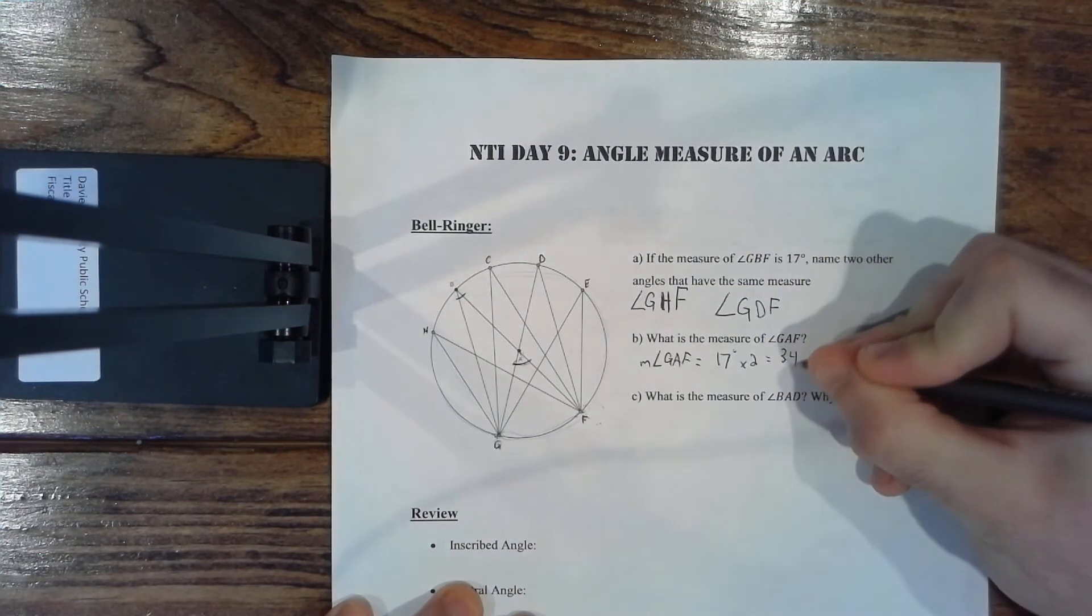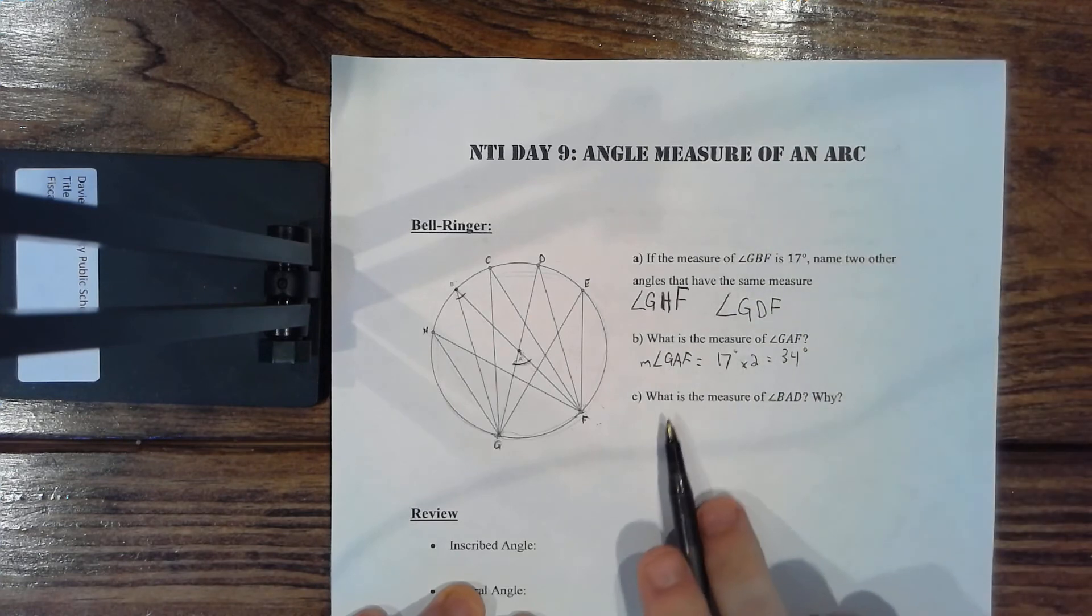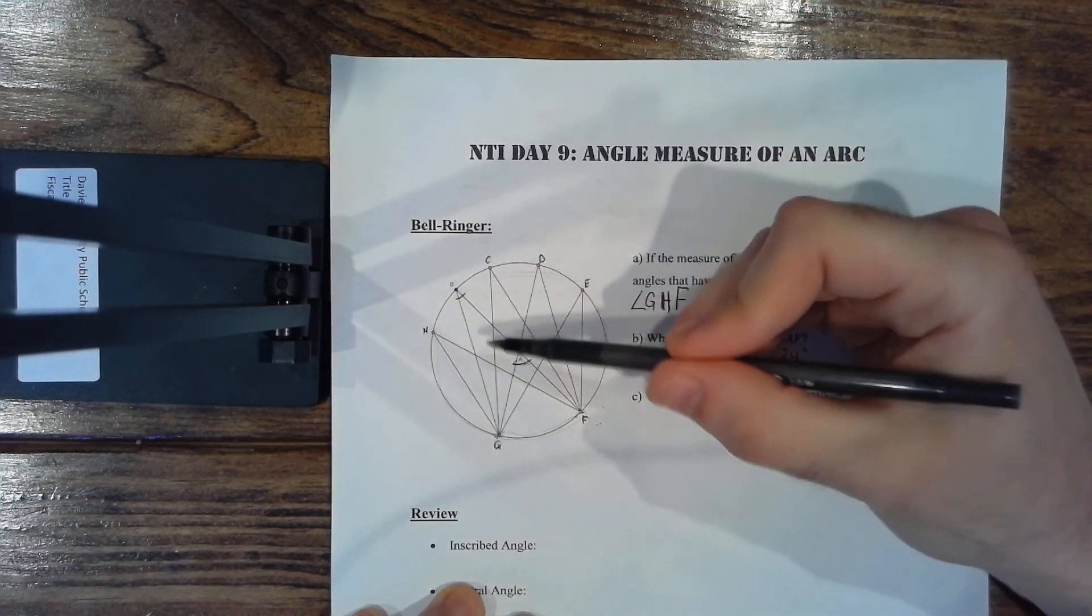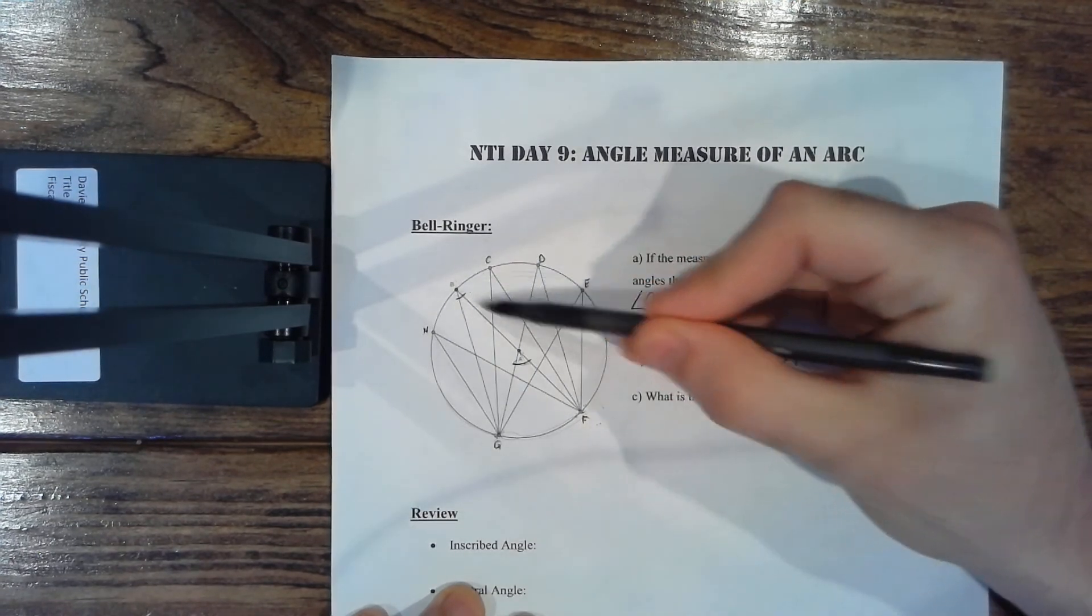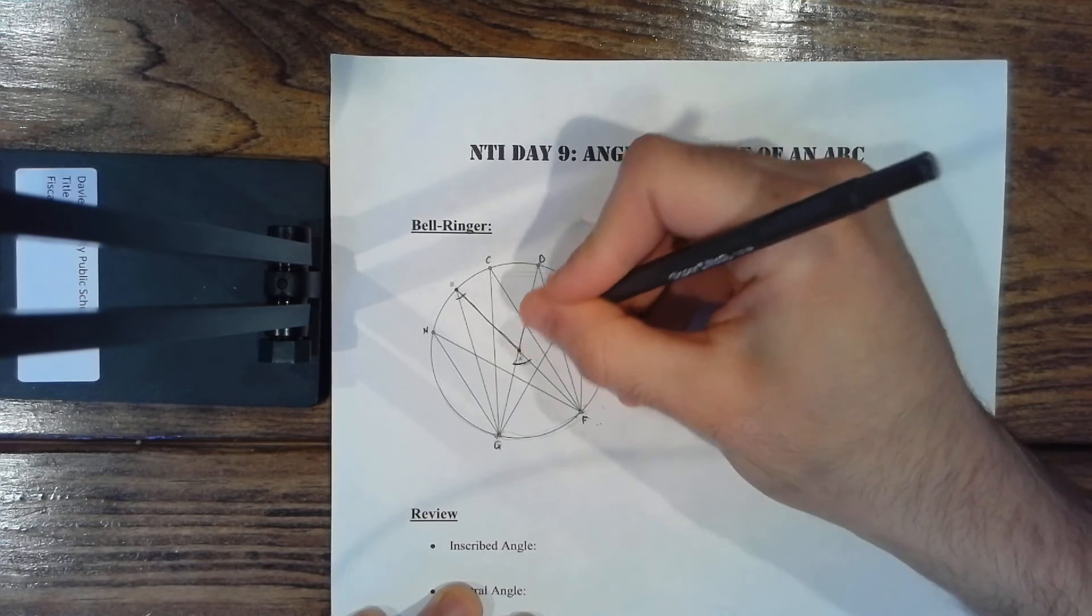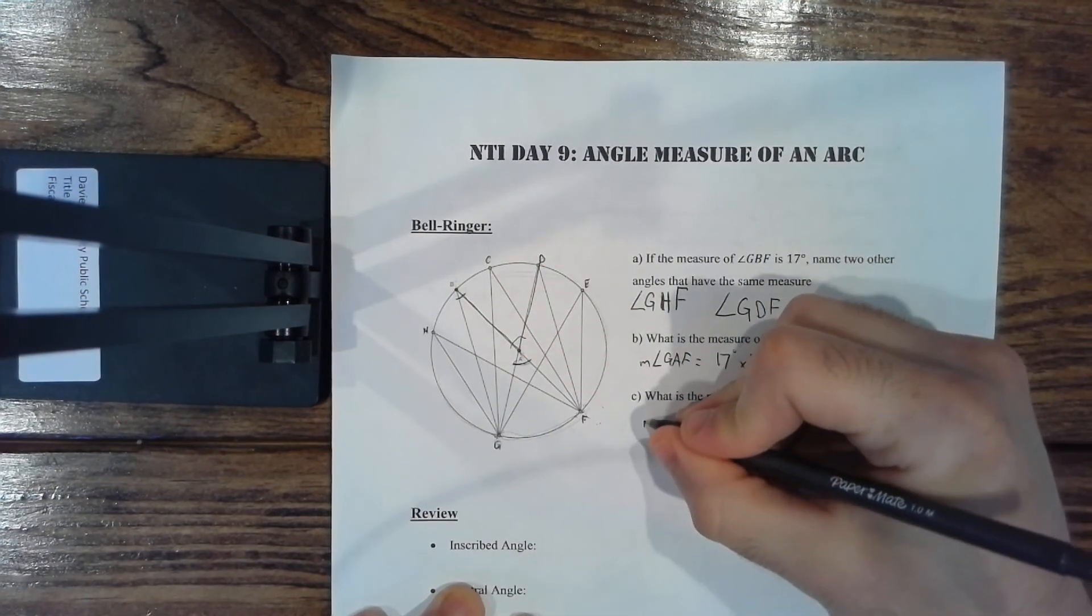So part C, what is the measure of angle BAD? BAD. So BAD, what's the measure of this angle? Well, that's going to be, measure of angle BAD is going to equal 34 degrees because...